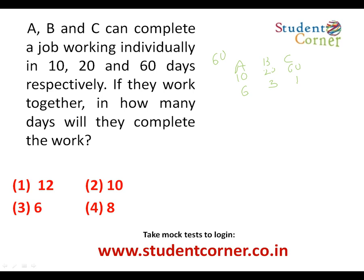Since total work is 60 units: A does 6 units per day, B does 3 units per day, and C does 1 unit per day. Combined in one day they do 10 units. So 60 units ÷ 10 units per day = 6 days. Therefore all three working together can complete the work in 6 days.